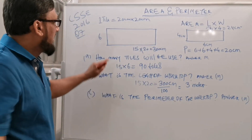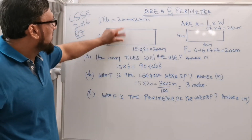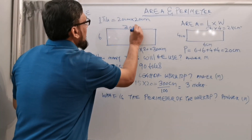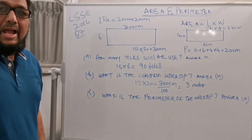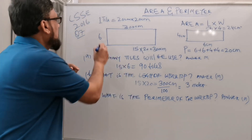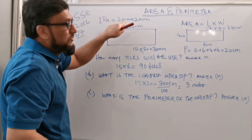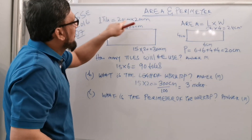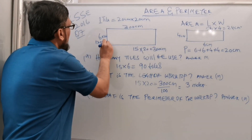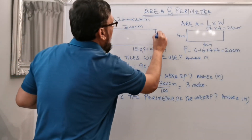The length of this worktop is 300 centimeters, and since the shape is rectangular, the opposite side is also 300 centimeters. For the width, he used 6 tiles, so 6 times 20 equals 120 centimeters. The opposite side is also 120 centimeters.